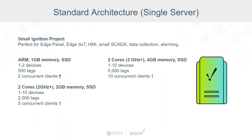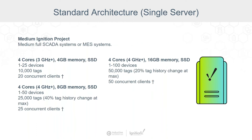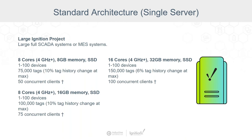These would all be considered small systems. If we go up to a medium-sized Ignition project, these numbers start increasing pretty significantly. Four-core systems with different amounts of memory and processor speeds, going anywhere from one to 25 devices for the smaller ones listed, up to 100 devices for the largest, 10,000 to 50,000 tags, and 25 concurrent clients up to 50.